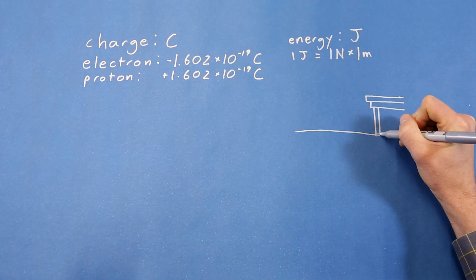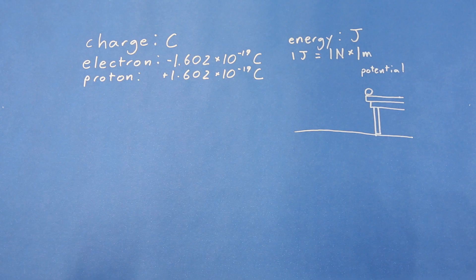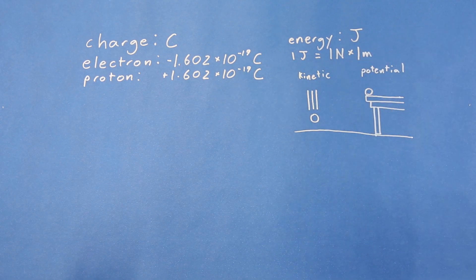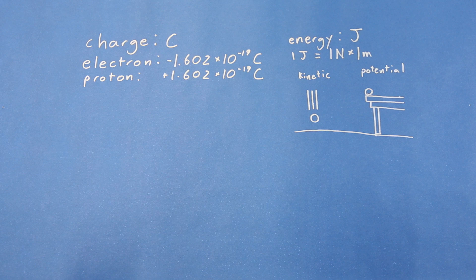Energy can either be potential, which results from an object's position or arrangement, or kinetic, resulting from the object's motion. Both kinetic and potential energy are given in joules. Now we can define voltage.